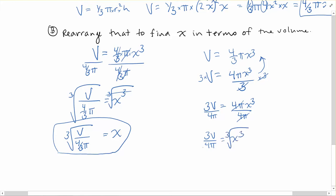Taking the cube root of both sides to cancel that. And I've got the cube root of 3v over 4 pi is equal to x. And these two mean the exact same thing. It's just a tidier way to write that.